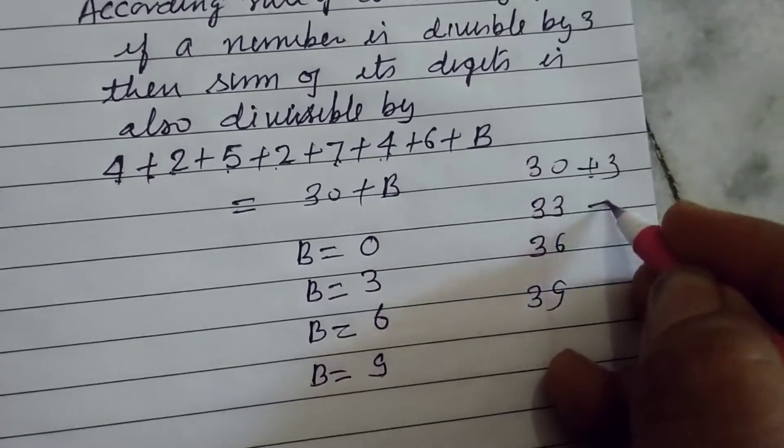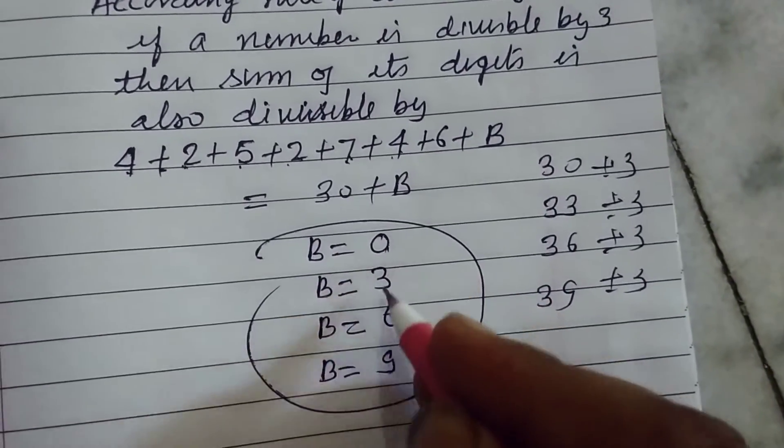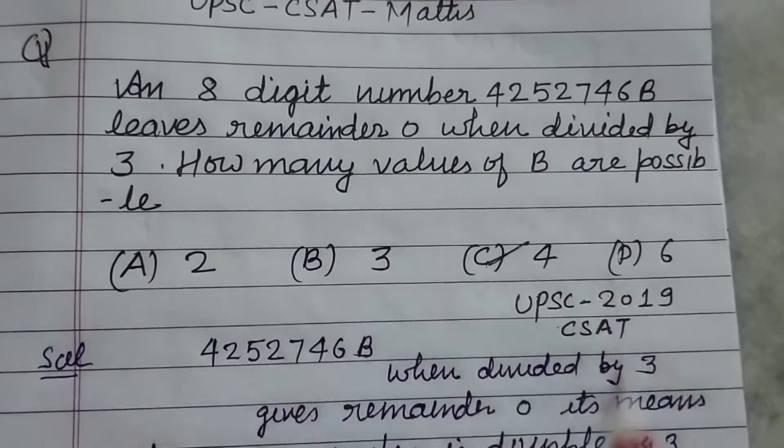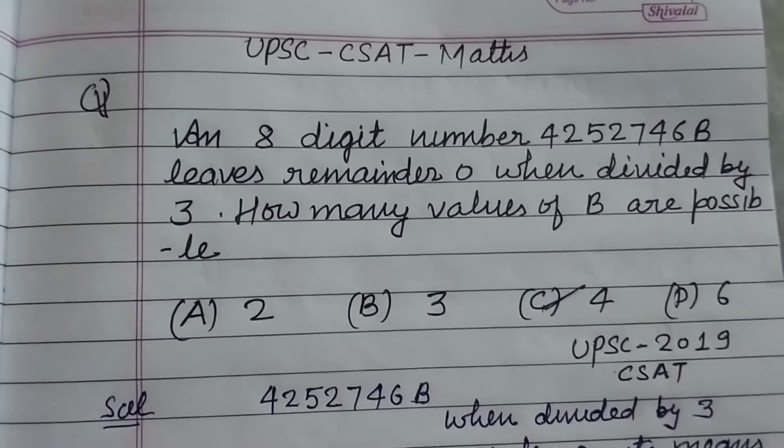And these numbers are all divisible by 3. So total values are 4: 1, 2, 3, 4 of B to make the number divisible by 3. So C is the correct answer of this question.